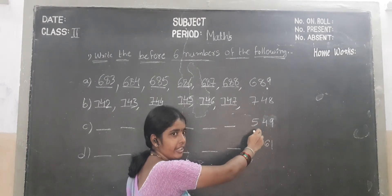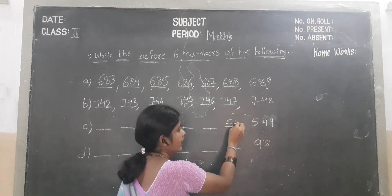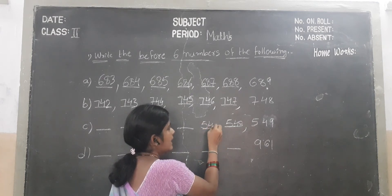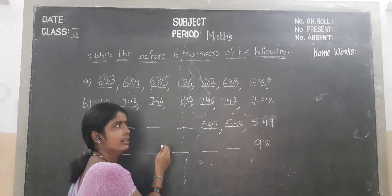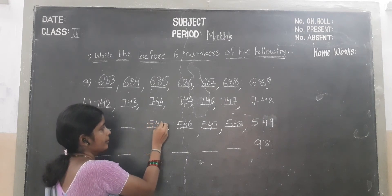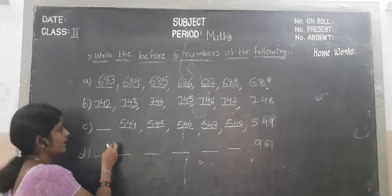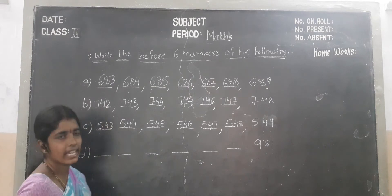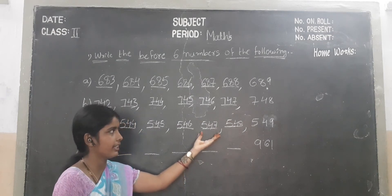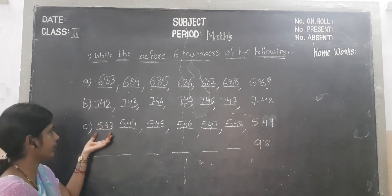Next — 549. We subtract minus 1 — which number will become children? 548. Before number is 547. Before number children? 546. Next 545. Next 544. Next 543.